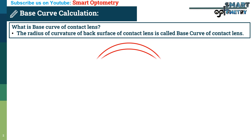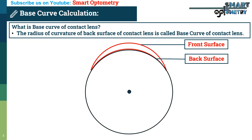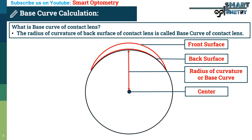If this is a contact lens, this will be the front surface and this will be the back surface of the contact lens. If we draw a circle using the curvature of the posterior surface of this lens, here it will be the center of the circle. This distance between the center and the center of the posterior surface of this contact lens is called the radius of curvature, which is called the base curve.